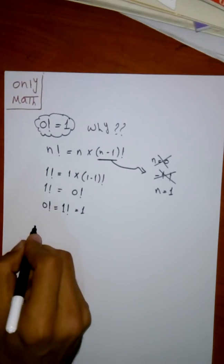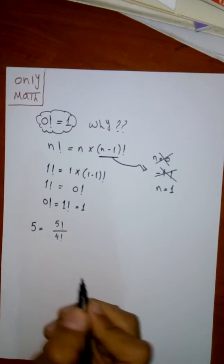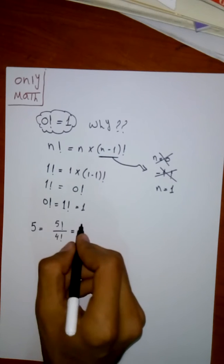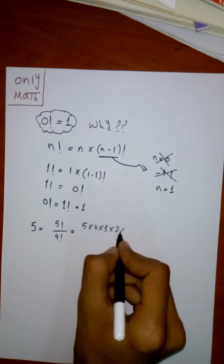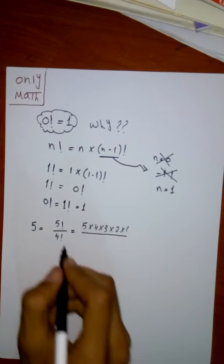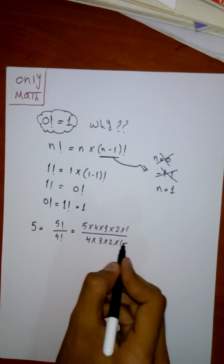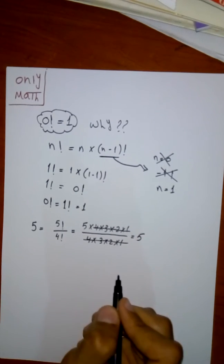If I told you that five equals factorial five over factorial four. If you don't believe me, let me tell you that factorial five equals five times four times three times two times one, and factorial four equals four times three times two times one. So we can cancel this by this, and it will be five.